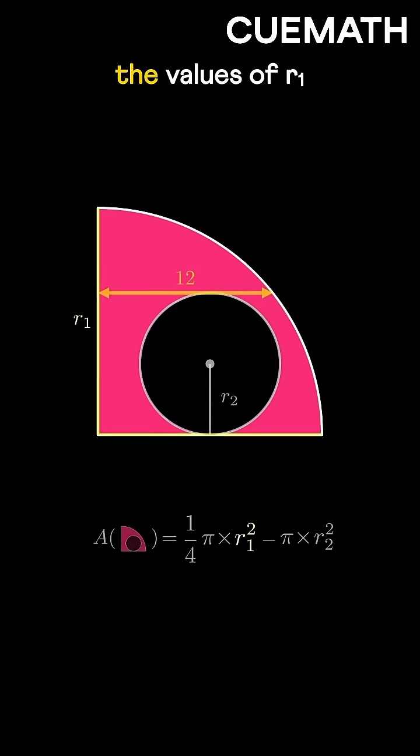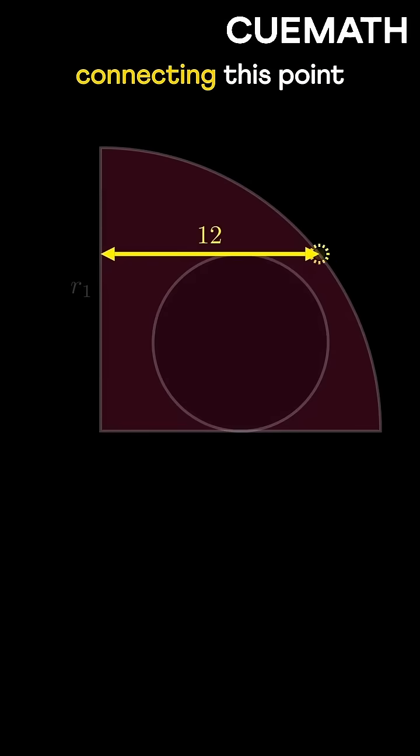We don't know the values of R1 and R2, but we do know this length. We can use it by connecting this point to the corner to form a right triangle.